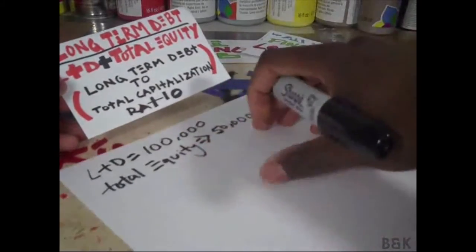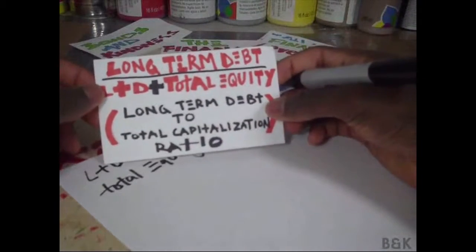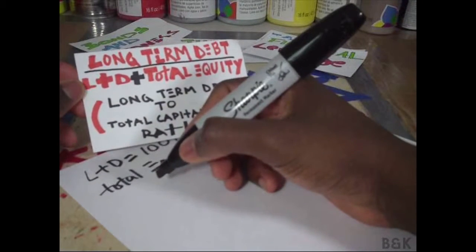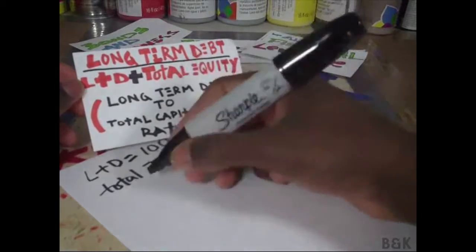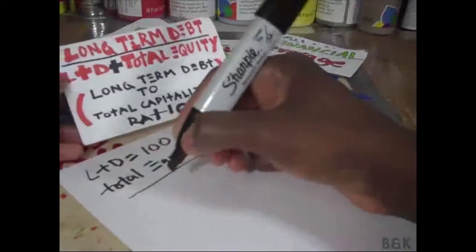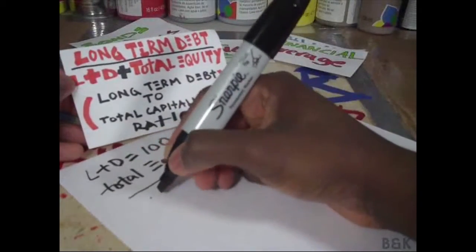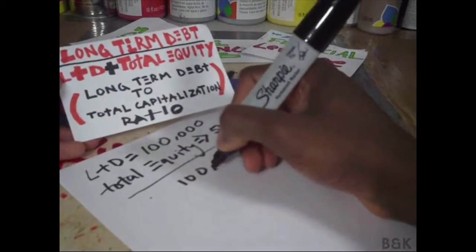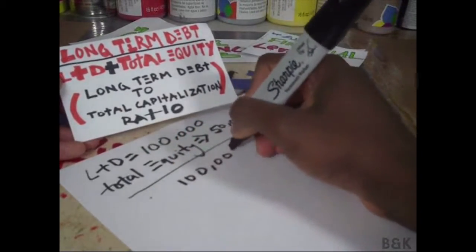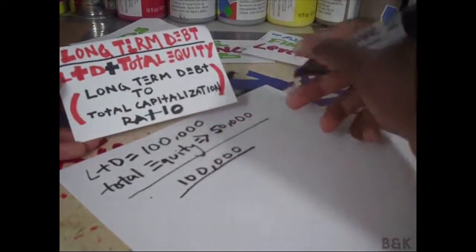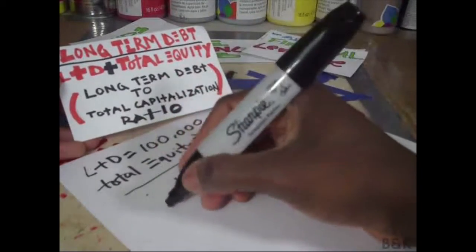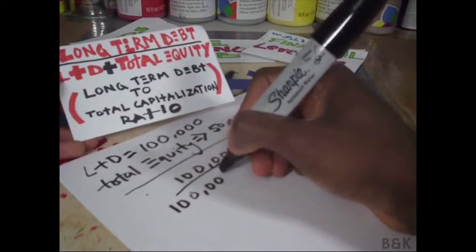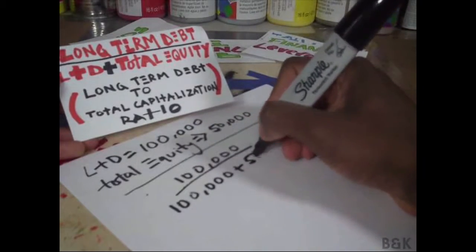The calculation: long-term debt over long-term debt plus total equity. So that's $100,000 over $100,000 plus $50,000.